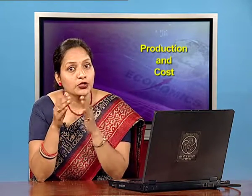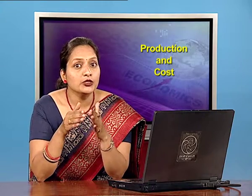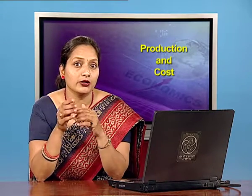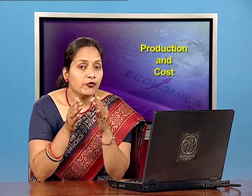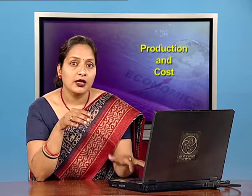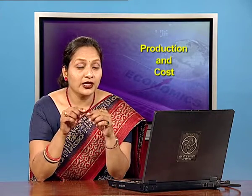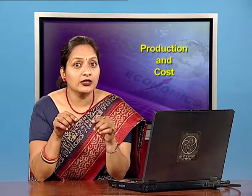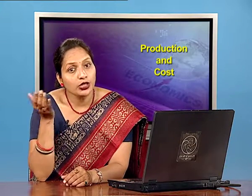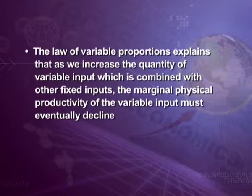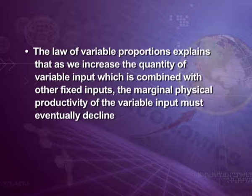When all the factors are proportionately changed, law of returns to scale is applicable, which will be studied in long run. The fourth assumption is that this law does not apply to those cases where factors must be used in some fixed proportion to yield one unit of output. The law of variable proportions explains that as we increase the quantity of variable input combined with other fixed input, the marginal physical productivity of the variable input must eventually decline.